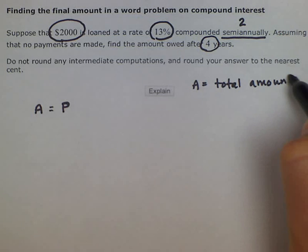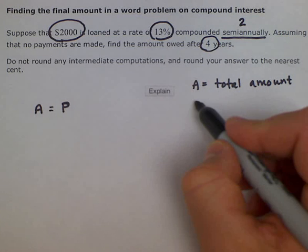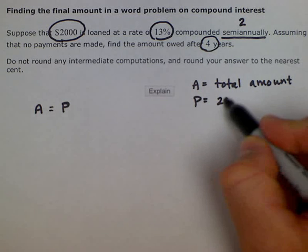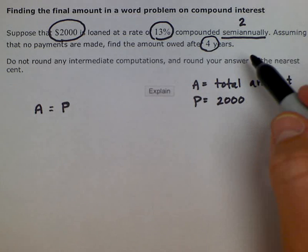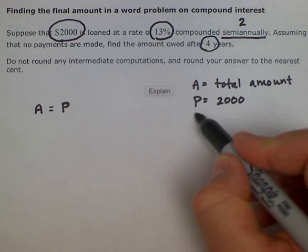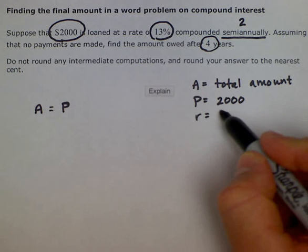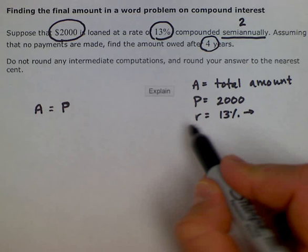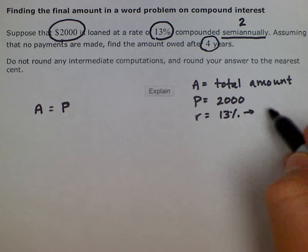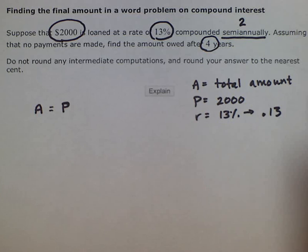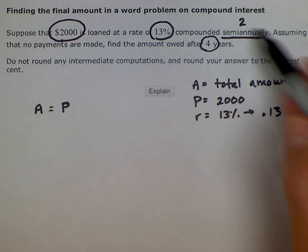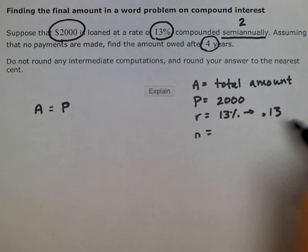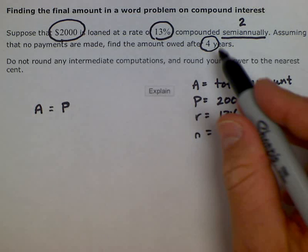Then we have our P, our initial principal, which is 2000. And then our rate r is going to be 13%, which if we write it in decimal form, which is what we need to use in this formula, we move the decimal two places back, it'd be 0.13. It's compounded semi-annually, so the number of times per year will be two. And then our time is going to be four years.